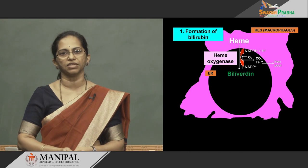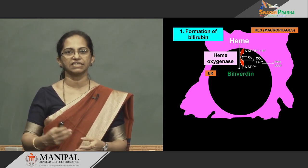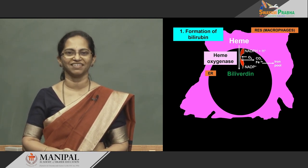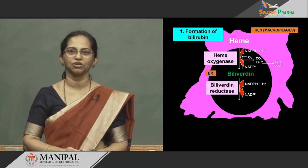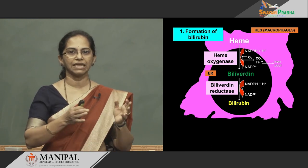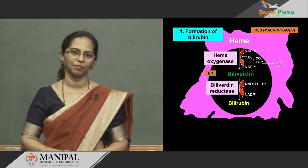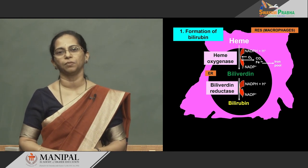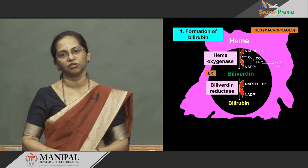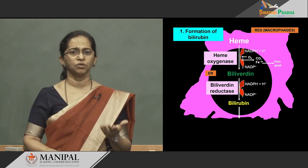When the ring opens up, it becomes a straight chain compound. Biliverdin, the green pigment, is then converted to bilirubin, the yellow pigment, by the enzyme biliverdin reductase. Since it is a reductase, you need hydrogen from NADPH. Formation of bilirubin is thus a two-step process. The reticuloendothelial system — liver, spleen — has produced the bilirubin, which is then thrown out into the blood. Bilirubin that comes out is called unconjugated bilirubin.